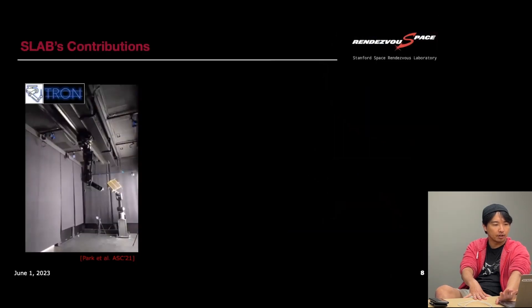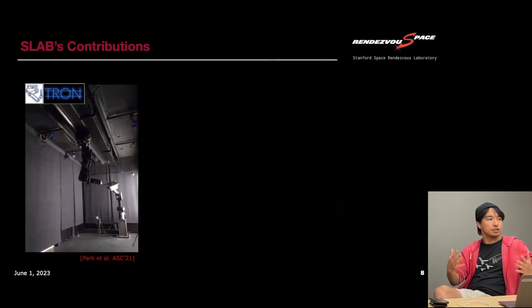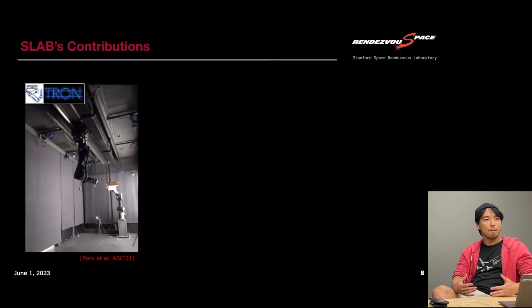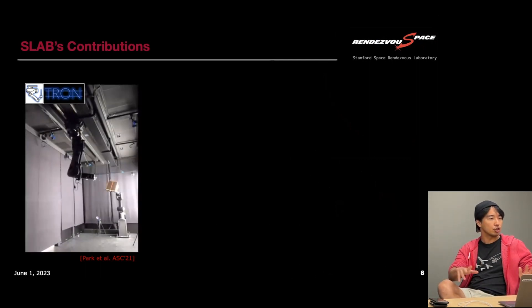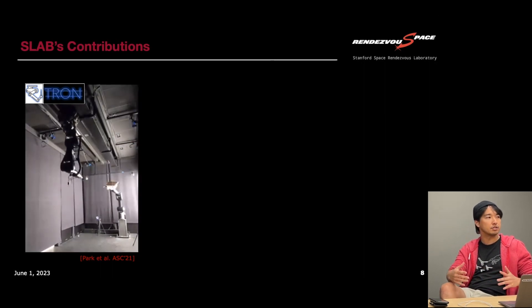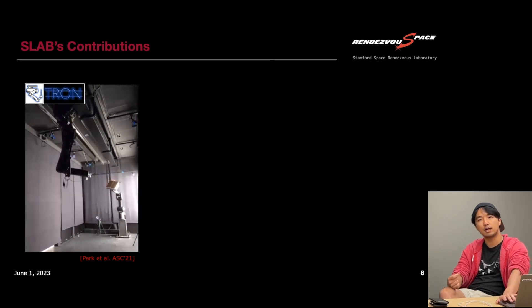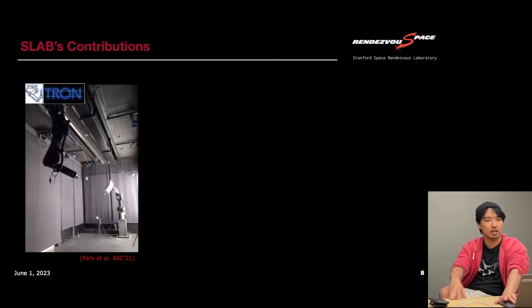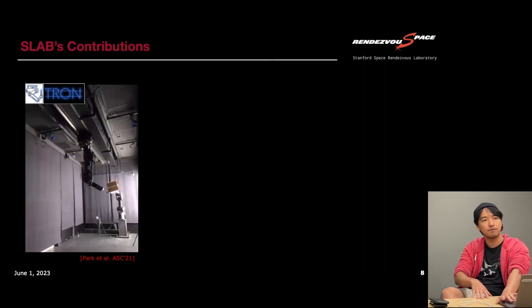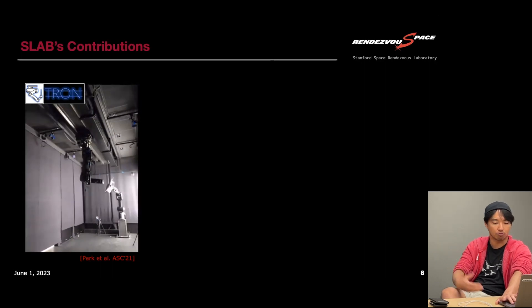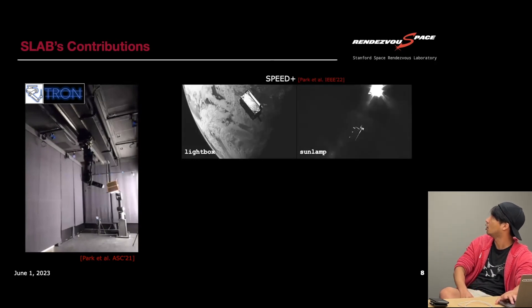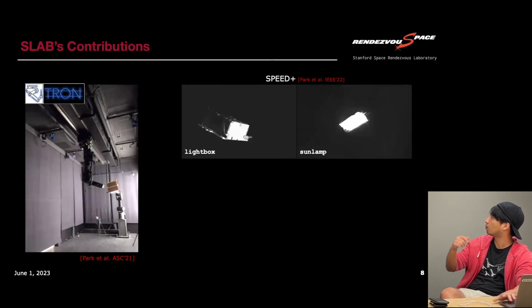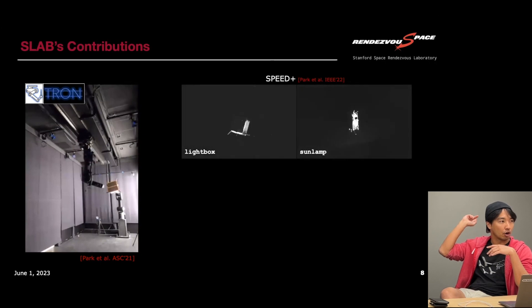We started by creating a database, because this is a computer vision problem for which machine learning is an excellent tool, but training requires a lot of data. We generated data from synthetic renders such as OpenGL, and recently also from an Unreal Engine-based simulator. To validate performance in space without actual space access, we built the TRON facility. From this, we produced two publicly available datasets — one is SPEED+, which includes synthetic images, lightbox images, and sunlamp images of the target mock-up model.